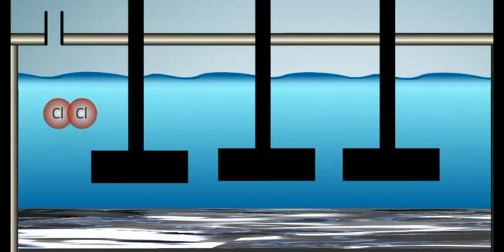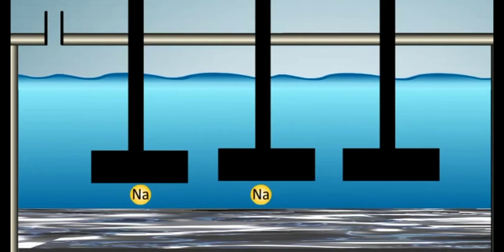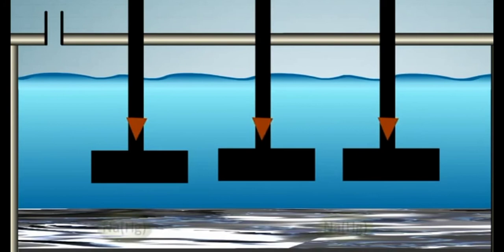At cathode, sodium ions are reduced to sodium atoms by electrons and the sodium atoms so produced react with mercury which is the cathode and form sodium amalgam.